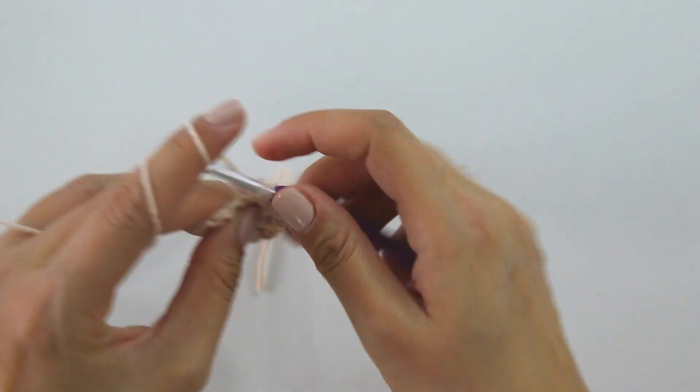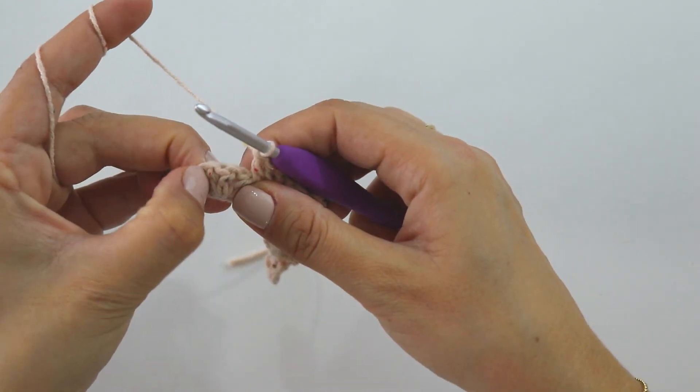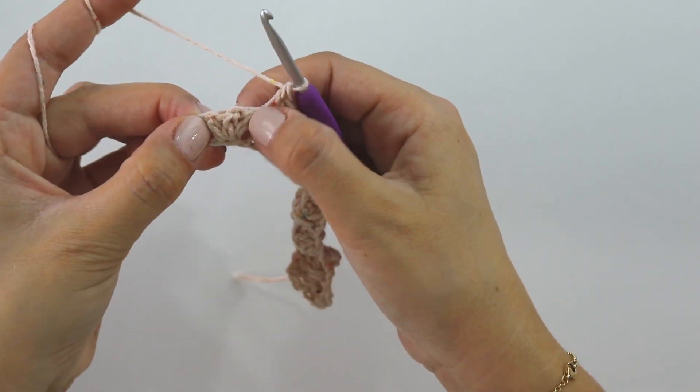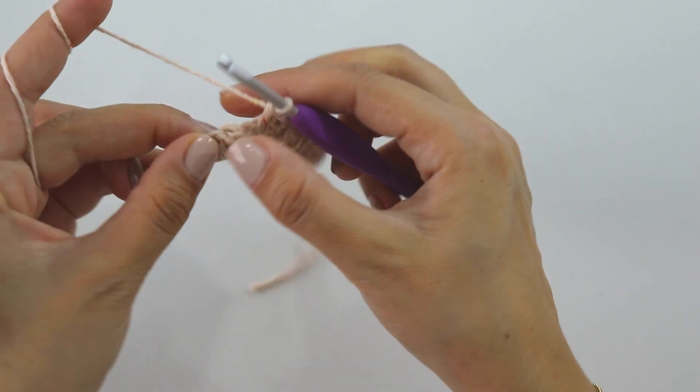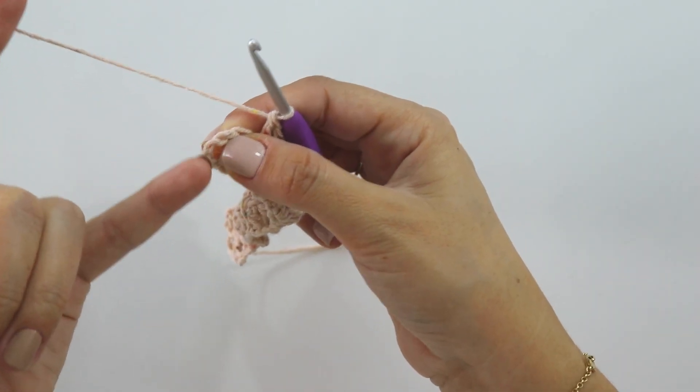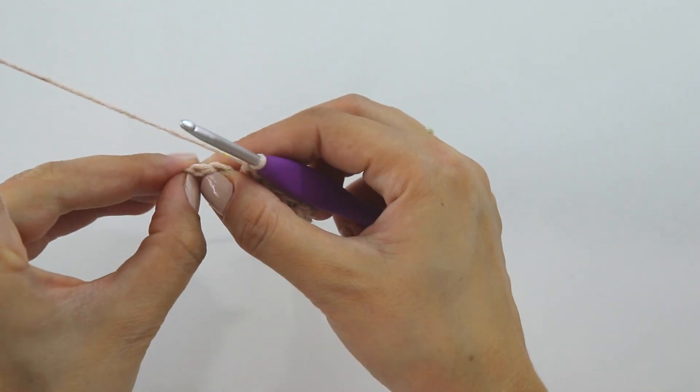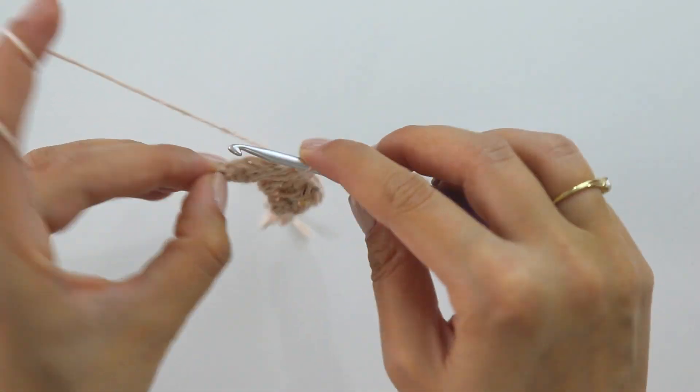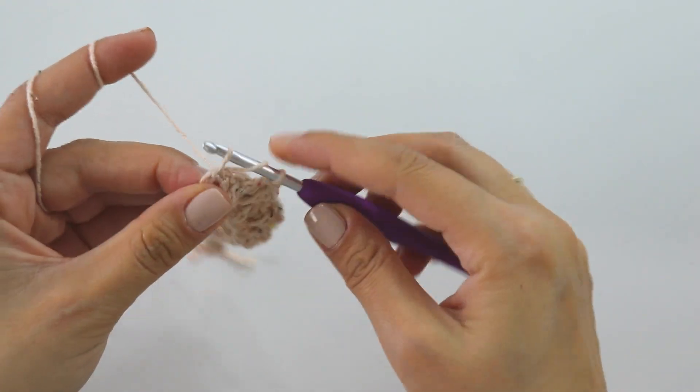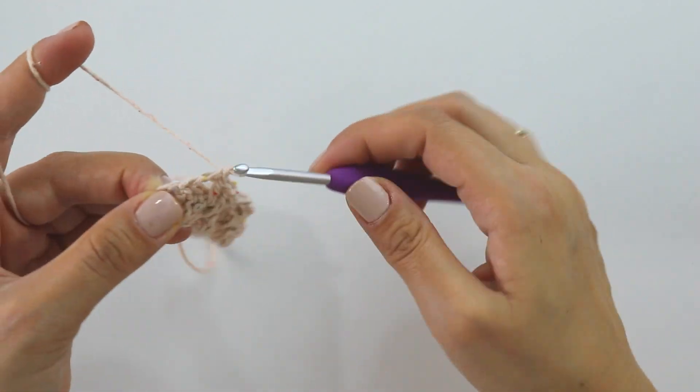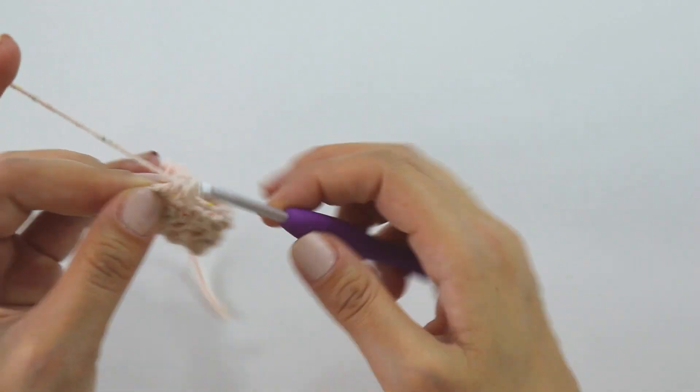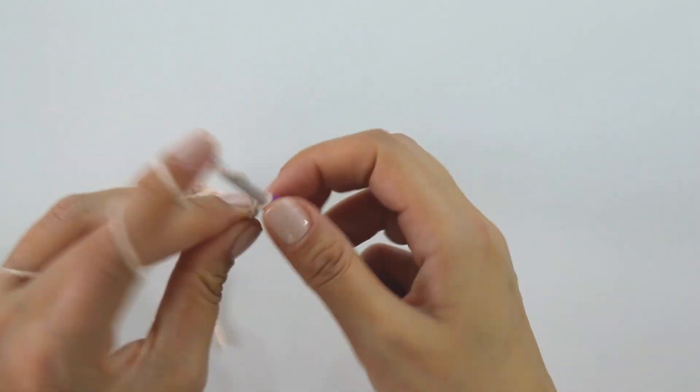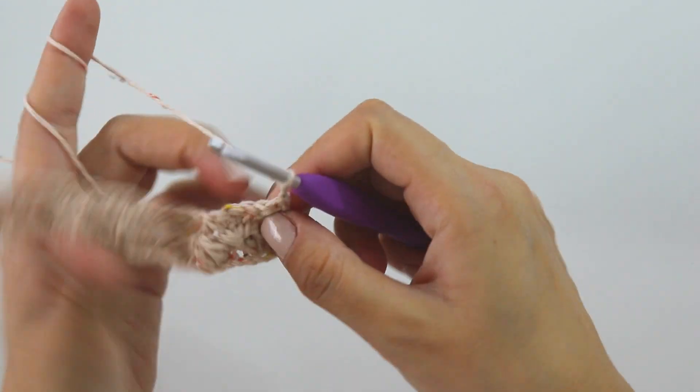I complete the last one, one, and between this three double crochet set and this chains, here, insert and make two double crochets - one, two. Chain three, turn.